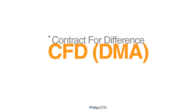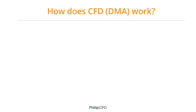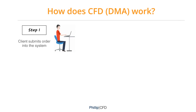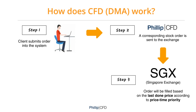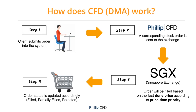How does CFD DMA work? To illustrate in 4 simple steps: once a client submits an order, a corresponding stock order is sent to the exchange. Similar to stocks, the order will be filled based on the last done price according to price-time priority. Lastly, the order status will be updated and reflected accordingly.